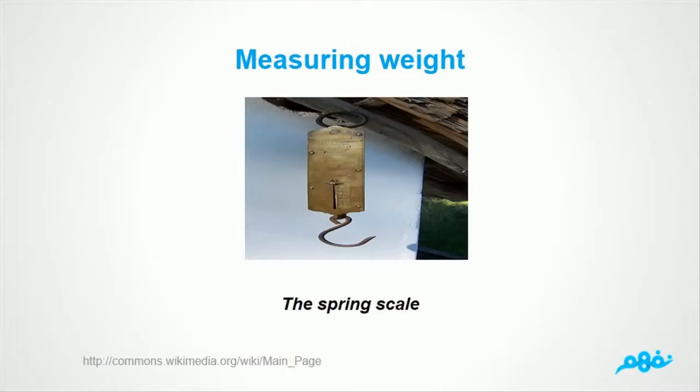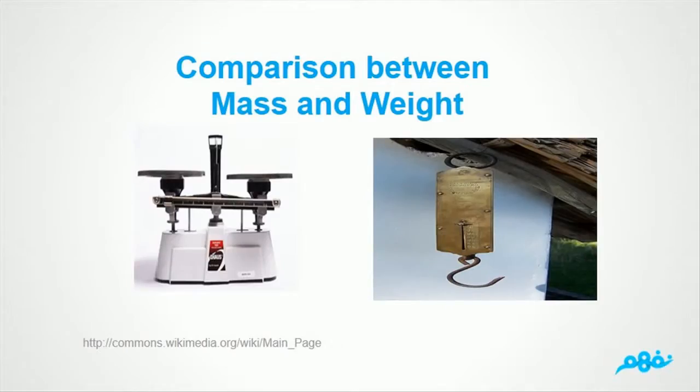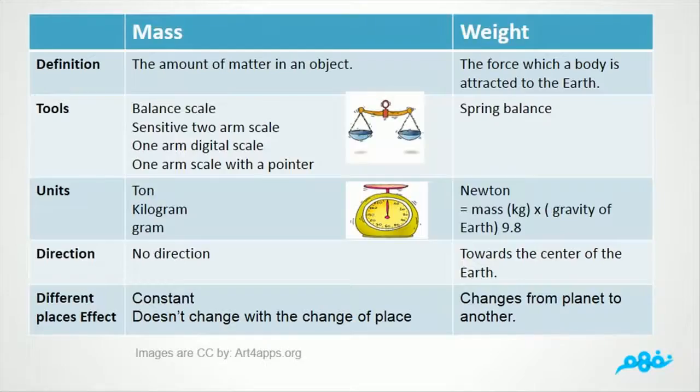Measuring weight: The spring scale. Comparison between mass and weight. Number 1 definition. Mass is the amount of matter in an object. Weight is the force which a body is attracted to the Earth.